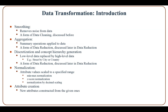Data transformation transforms attribute data into suitable forms for data mining. First, smoothing is used to remove noise from data — it is a form of data cleaning and was discussed before. In data aggregation, summary operations are applied to data; it is a form of data reduction and will be discussed later.